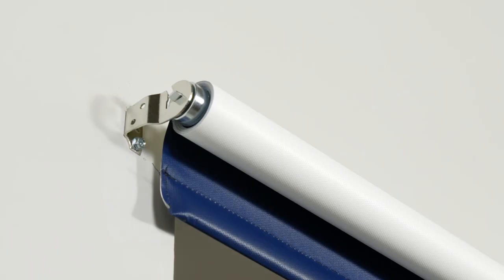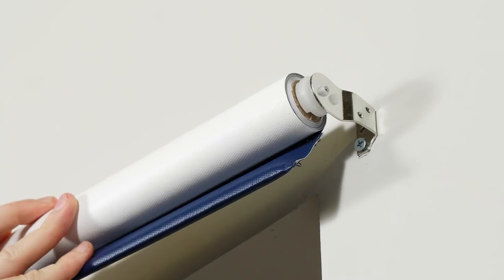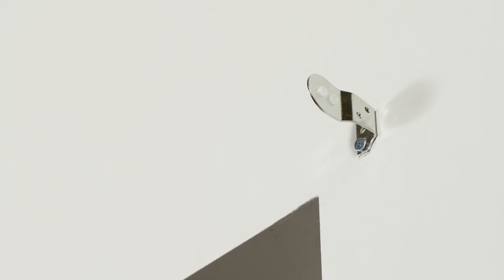To remove your shade, raise it fully first. Lift the shade off the hooked bracket, then slide the shade away from the opposite bracket.